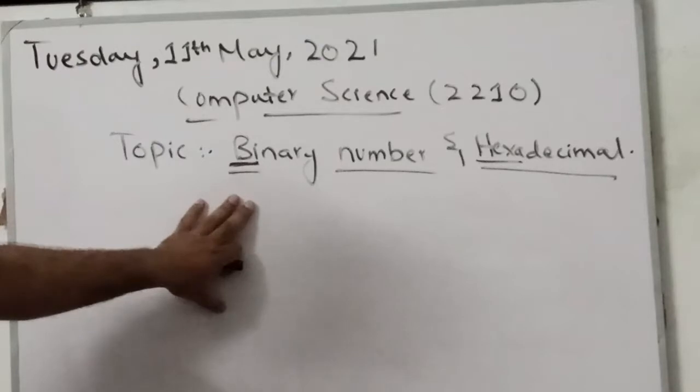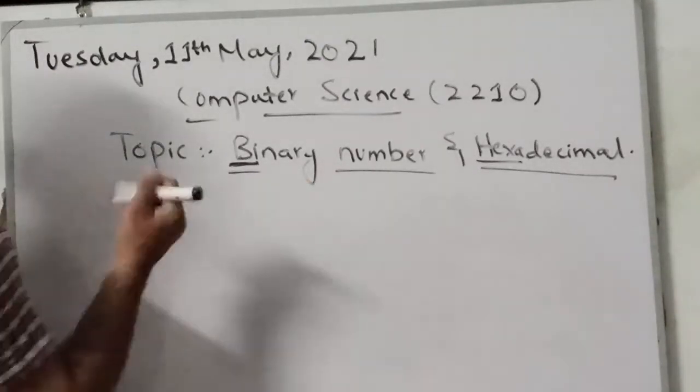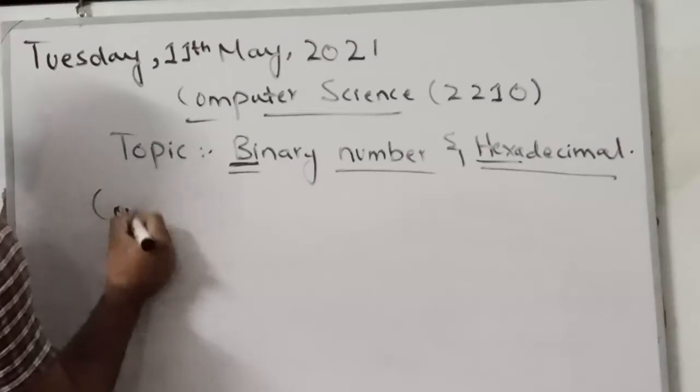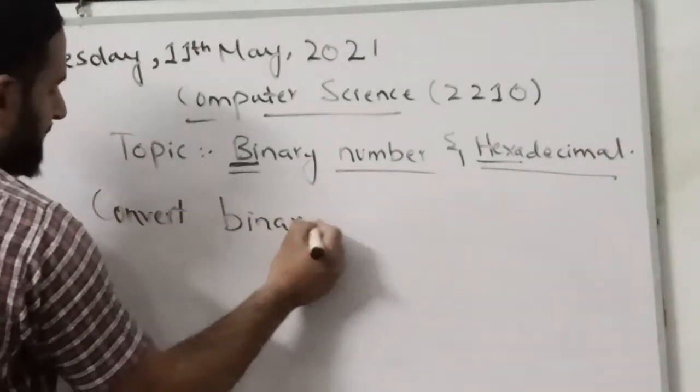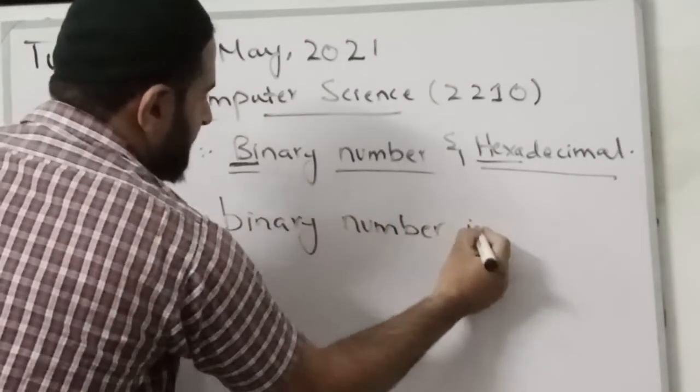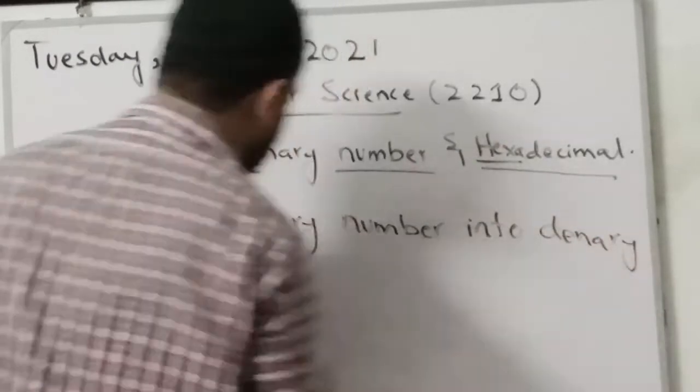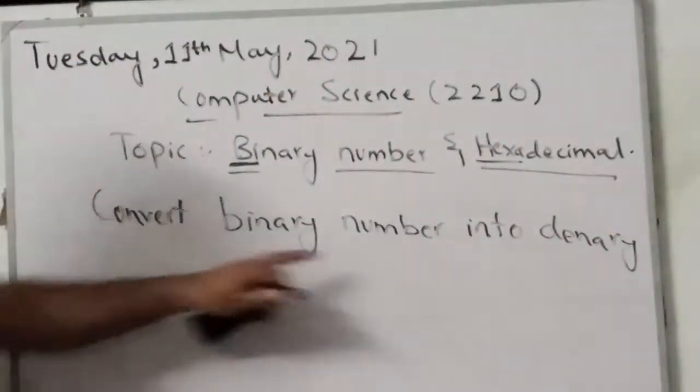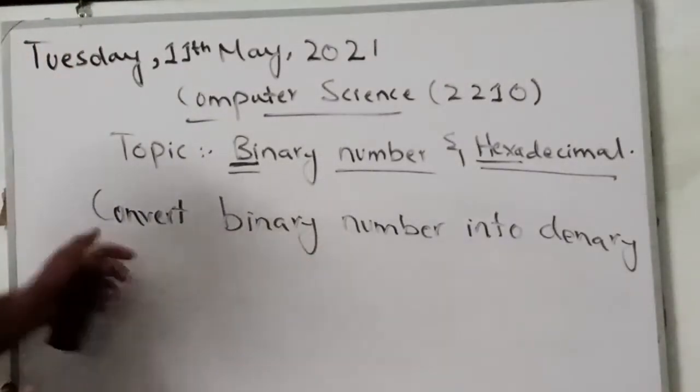So let's take a start. First objective was about to convert binary number into denary. This is our first objective: convert binary number into denary. It is a very interesting topic, so be attentive.